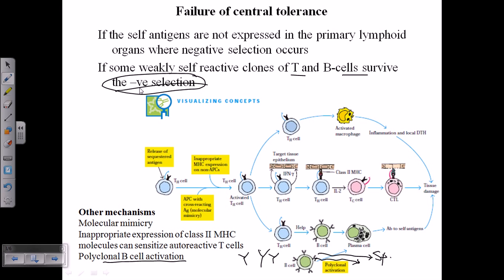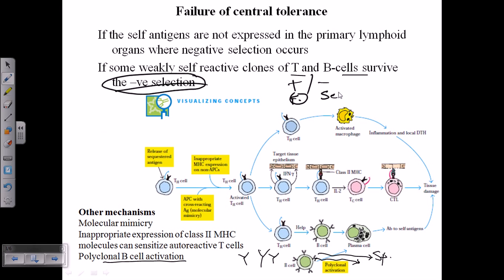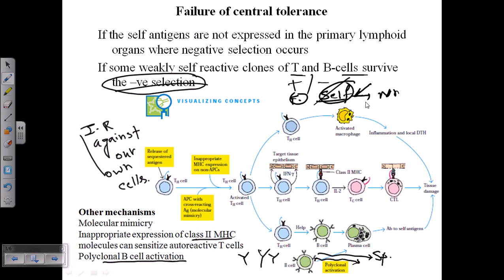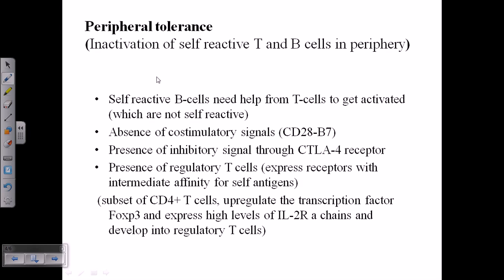Some weakly self-reactive T and B cell clones can survive negative selection. In negative selection, cells are provided with a self molecule — if they recognize self as non-self and start killing it, they should normally be eliminated. However, if these self-attacking T cells somehow manage to survive, they can lead to autoimmune disorders. During peripheral tolerance, inactivation of self-reactive T and B cells can also fail.